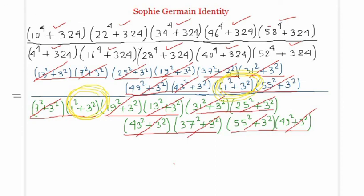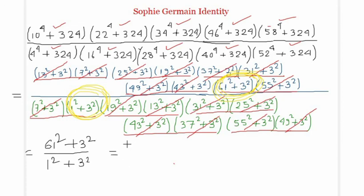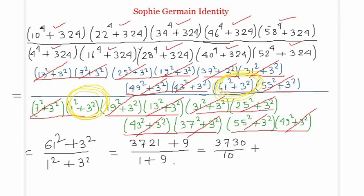What actually remains in the numerator is 61² + 3², and in the denominator is 1² + 3². A simple calculation: 61² = 3721 and 3² = 9, giving 3730 in the numerator. In the denominator, 1 + 9 = 10. So the answer is 3730 ÷ 10 = 373.